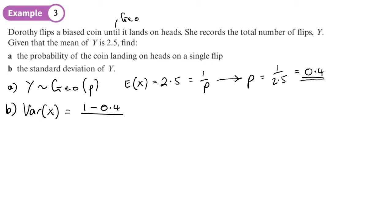So 0.6 divided by 0.16, I'll get 15 over 4.